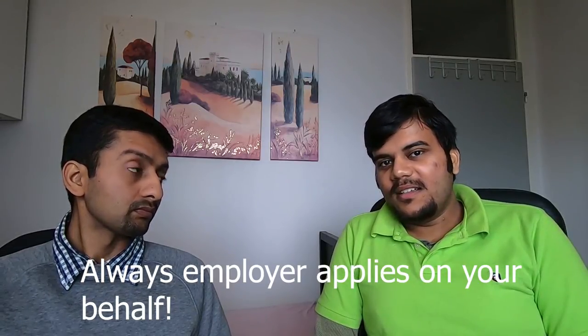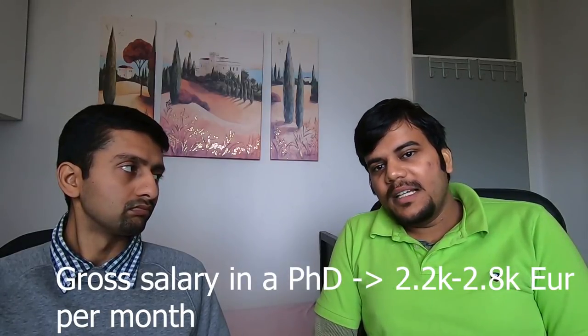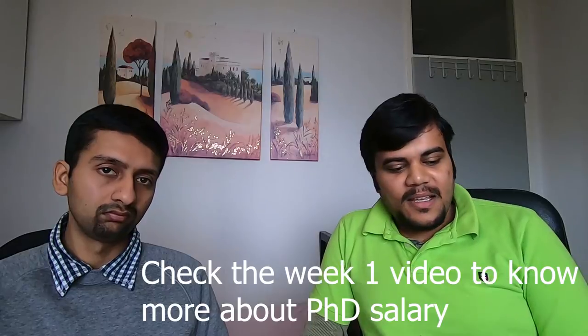Last thing I just want to add, regarding the salary in a PhD, normally the gross salary varies between 2.2K to 2.8K throughout the four years. Mostly in first year you get around 2.2K gross and it increases a lot in the second year. And then it continues progressive increase, like 2.5, 2.6, 2.8, something like that for second year to fourth year onwards. So it's a little bit less than what you get in a job, but then you get the degree and it's something different. So I don't want to compare the PhD and the job. There are different perks and downsides of each. You can also check the week one video if you have not checked about the salary of PhD.